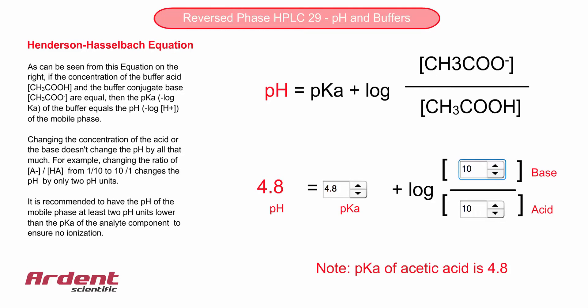This equation shows the relationship between pH, the pKa of the buffering acid, and the concentration of the acid and its conjugate base. The pKa is simply the negative log of the equilibrium constant, which we have already defined.